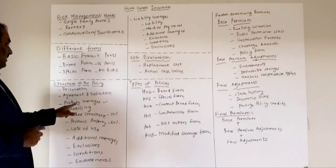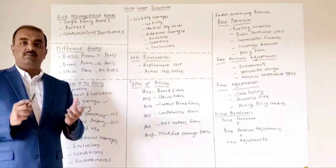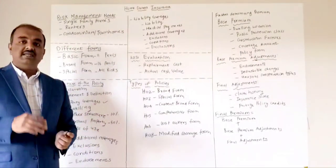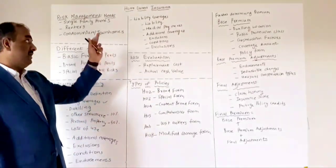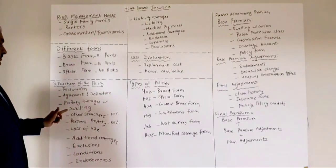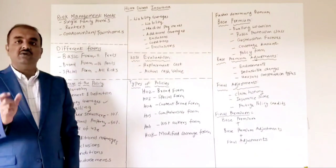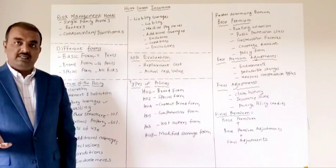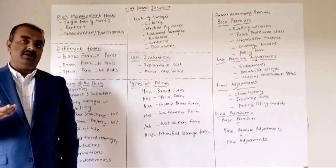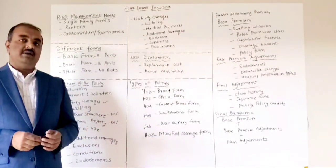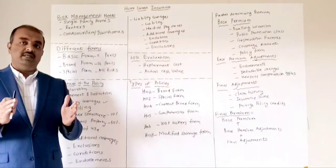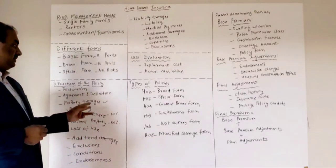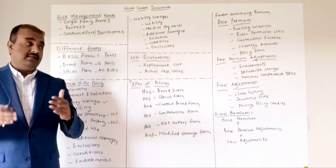There are two kinds of coverages. One is property coverage, which covers your home, your personal property, and other structures. The second is liability coverage — if there is any damage to your neighbor or someone else due to your negligence, that will be covered under liability. Starting with property coverage, the first is dwelling coverage, which covers your home in case something happens to it. Don't confuse dwelling coverage with your total home value — dwelling coverage is the amount it takes for the insurance company to rebuild the home to its original state.